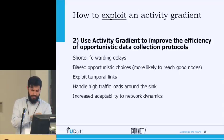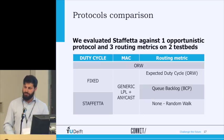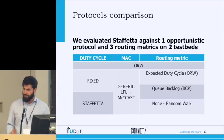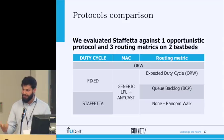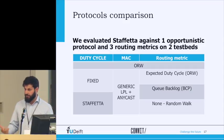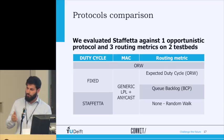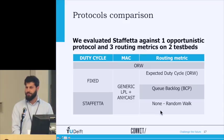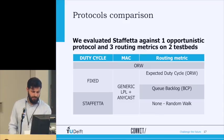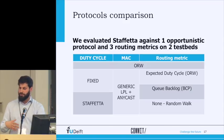We evaluate Stafetta against one opportunistic data collection protocol — the state-of-the-art ORW — and three routing metrics. We compare against the native ORW as presented, then implement a generic low-power listening with anycast, and implement three routing metrics based on state-of-the-art protocols: expected duty cycle from ORW, Q-backlog from backpressure, and a null routing metric representing random walk. We tested all combinations on two testbeds — Flocklab and Inria. For timing reasons I will show only Flocklab results, but you can check the paper for more.